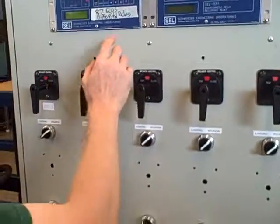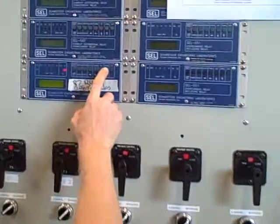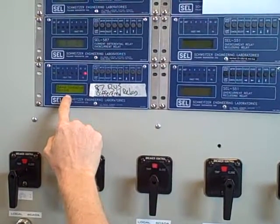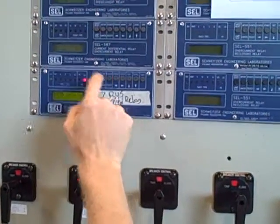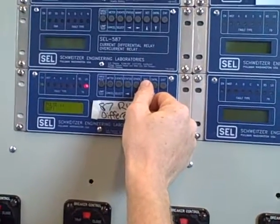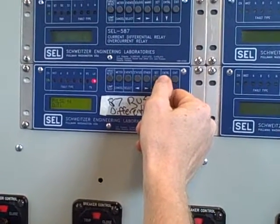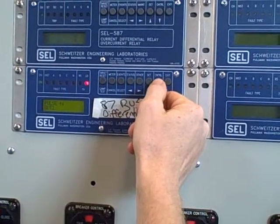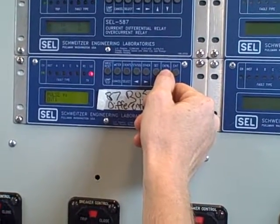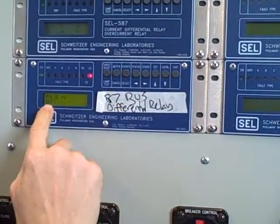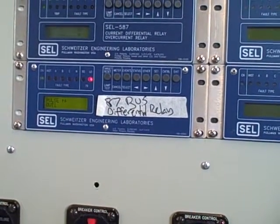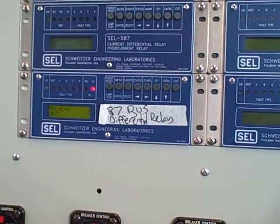Going in here I push the control button — output contact testing. I say yes, I want to do that, and then at this point I can select different output contacts: output one, output two, output three, output four, alarm, and it rolls back to output one. Output one is the contact that runs to our 86 relay to trip it, so that is the one I'm going to pulse.